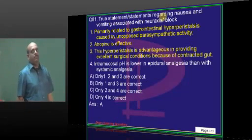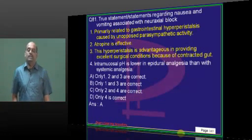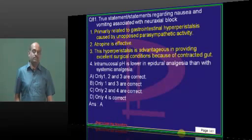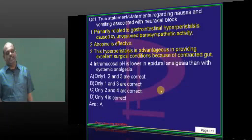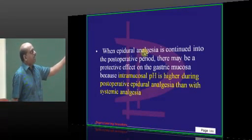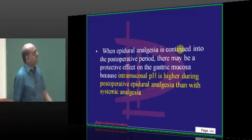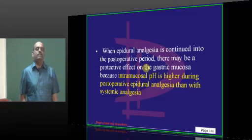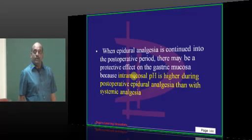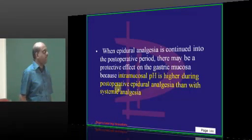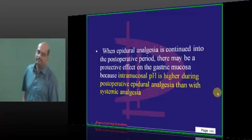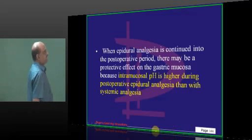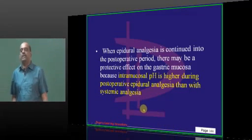Regarding the nausea and vomiting in a neuroaxial block — pathophysiology of anesthesia — one of the interesting questions asked in the exam. Whenever you continue epidural analgesia into the postoperative period, there is one advantage: it is protective for the gastric mucosa because intramucosal pH is higher during postoperative epidural analgesia compared to spinal anesthesia. That is what you have to consider an advantage of giving epidural blocks.